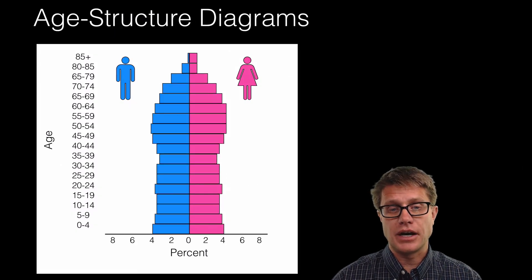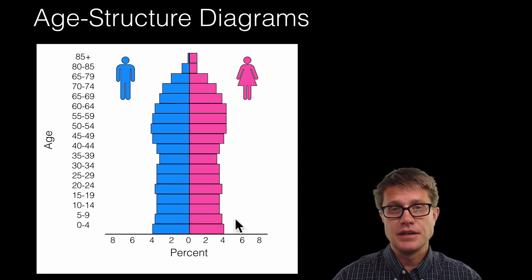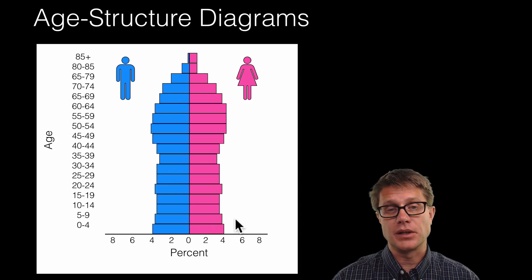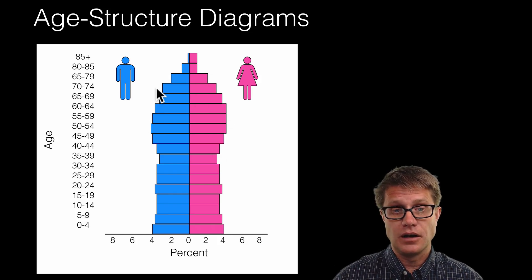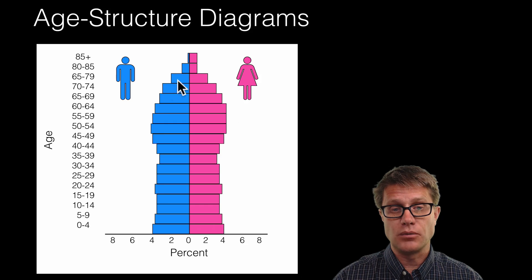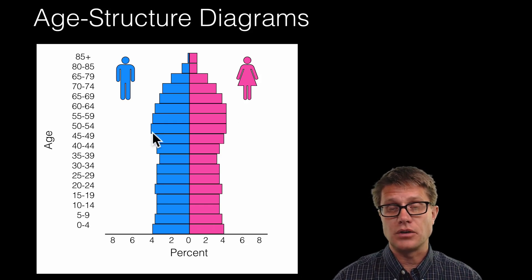If however we get an age structure diagram that looks like this, where it is pretty much straight on the sides, this is going to be a more stable population. Now this would be what the United States looks like. And you can even see the baby boomers, this large group of babies that were born after World War II and they are just going to work their way up through the age structure diagram.